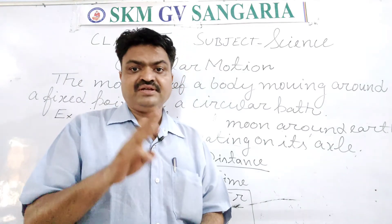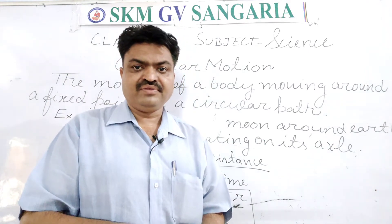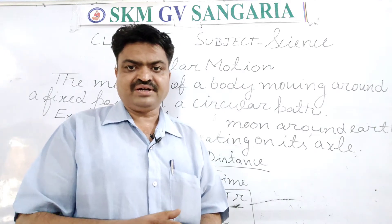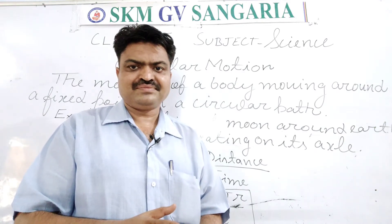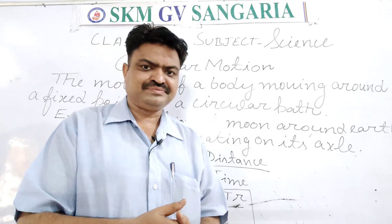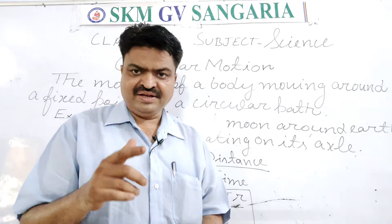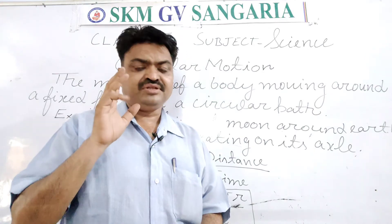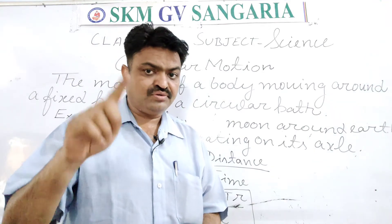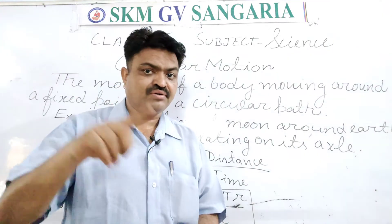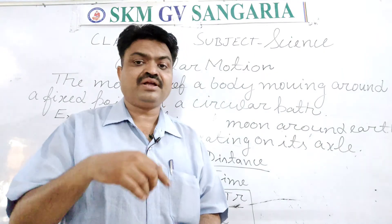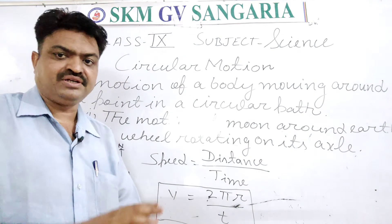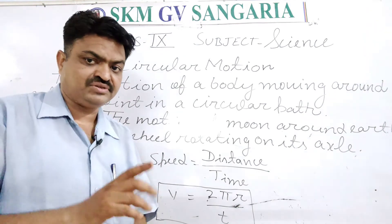There are three hands found in the clocks, as you know. They are the hour hand, minute hand, and second hand. These are the hands of the clocks, and those hands have rotation — they have motion due to circular motion only, and this motion is known as circular motion.